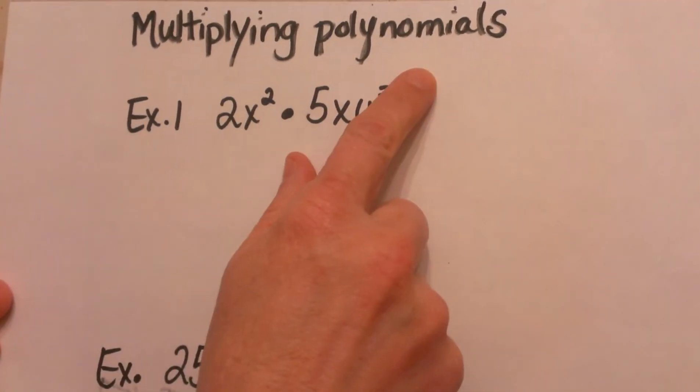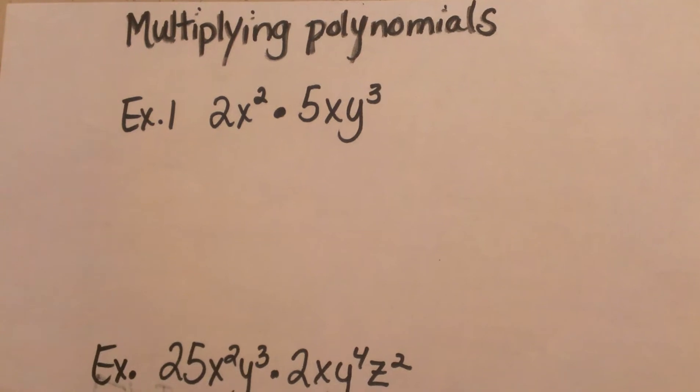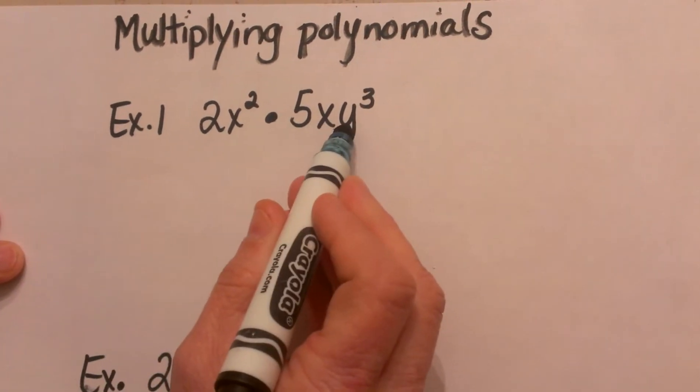We are going to look at multiplying polynomials. So here is our first example. We have 2x squared times 5xy cubed.